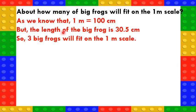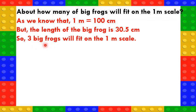Now, children, please pay attention about how many big frogs will fit on a 1 metre scale. As we all know that 1 metre is 100 centimetres. But the length of the big frog is 30.5 centimetres. So, 3 frogs — 30.5 plus 30.5 plus 30.5 — covers 91.5 centimetres out of 100 centimetres, that is 91.5 centimetres out of 1 metre. So, 3 big frogs will sit on the 1 metre scale.